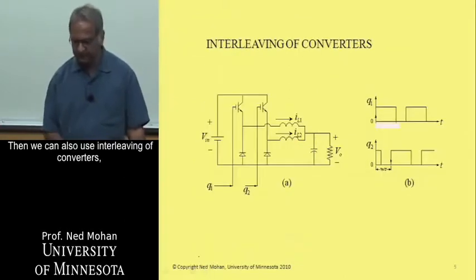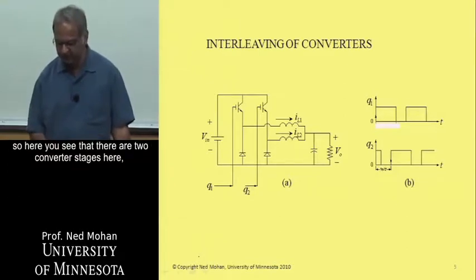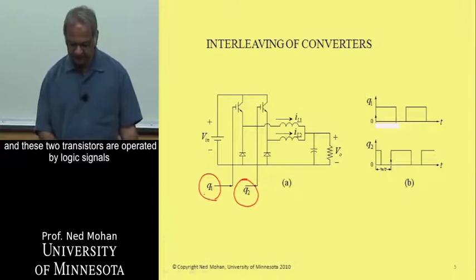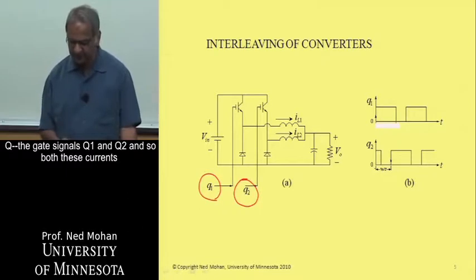And then we can also use interleaving of converters. So here you see that there are two converter stages here. And these two transistors are operated by logic signals, the gate signals Q1 and Q2.